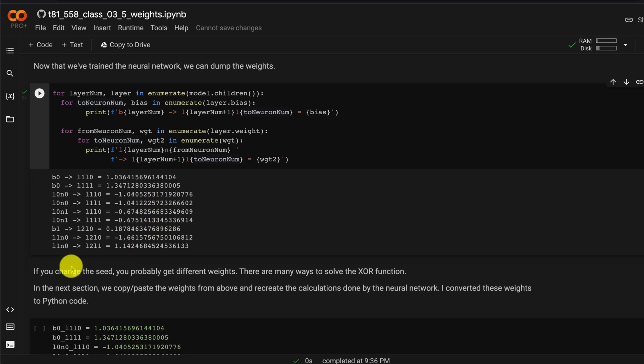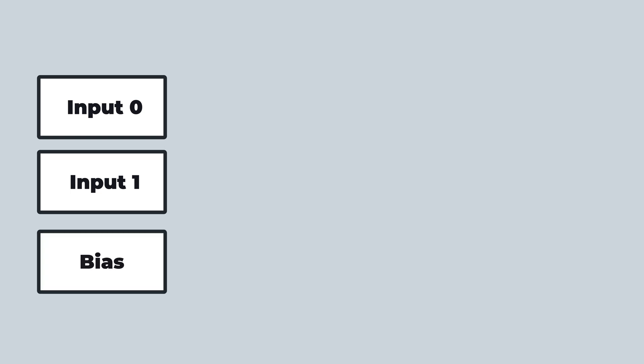Let's plot this all on a graph so that we can actually calculate it. The neural network has two input neurons, inputs 0 and 1. I am labeling them starting at 0 and the input layer also has a bias neuron.